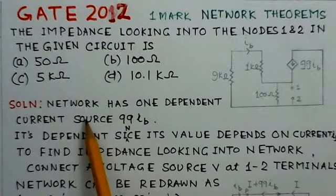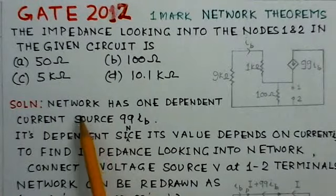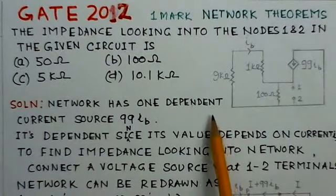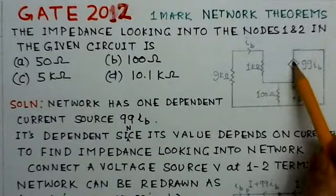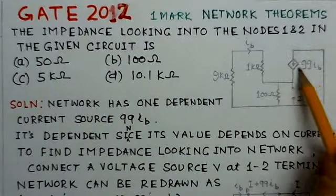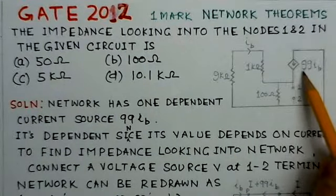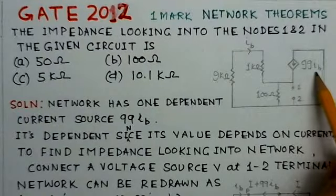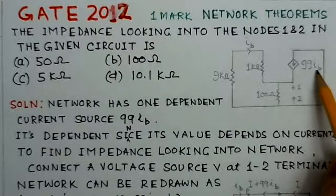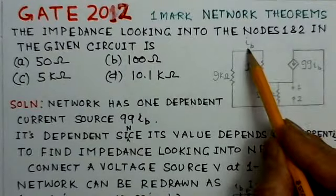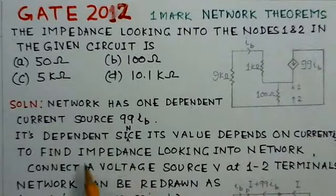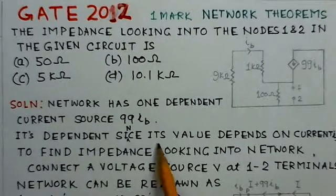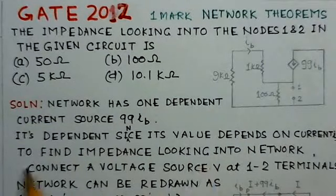If you see the network, it has one dependent current source. This current source has value 99 IB, which depends on the value of IB in the other portion of the network. So it is a dependent source, since its value depends on the current IB.